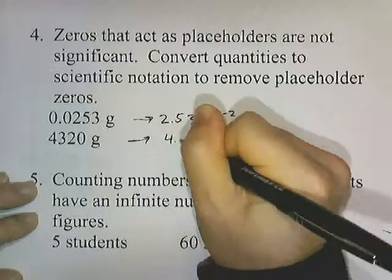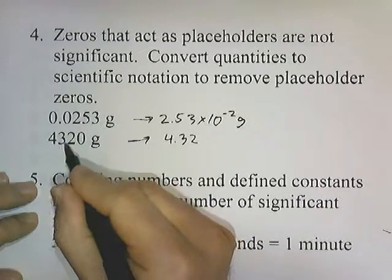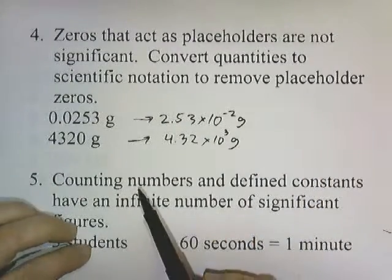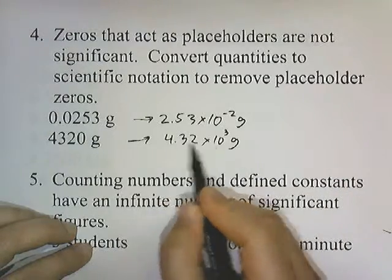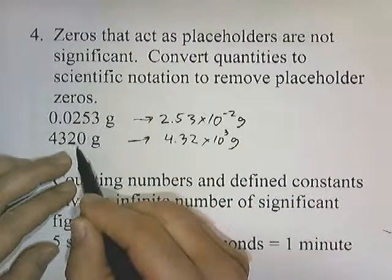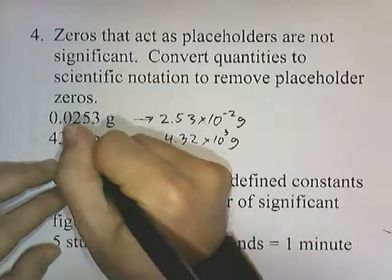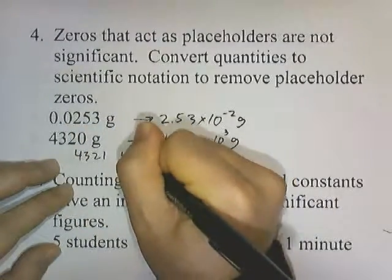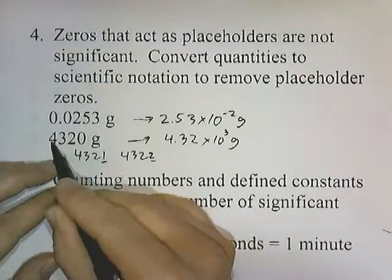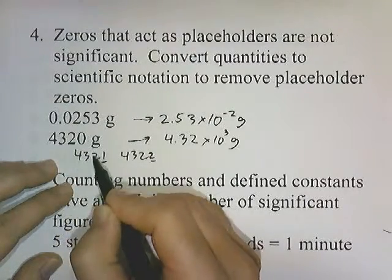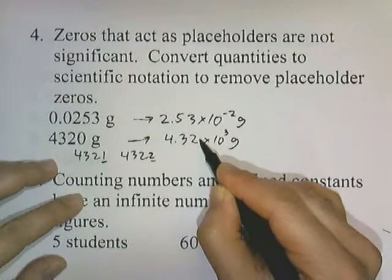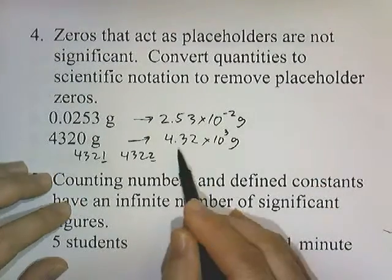This one is going to be 4.32 times ten to the third grams — three significant digits. The reason it's misleading to have a zero right here is our measuring instrument can't measure the ones digit. What we measure might actually be 4,321 or 4,322 — we don't know what this number is. This zero is just a placeholder; it fills things in to indicate that it's at least 4,320. So when it's written in this form, we're saying we don't know what the number behind the two is — it could be a one, two, or three.